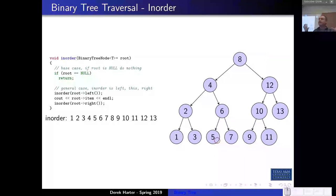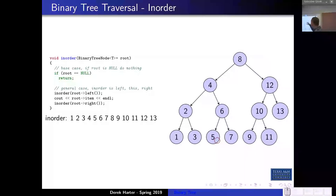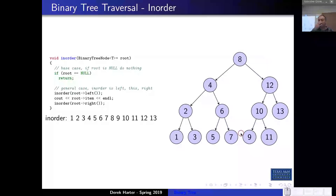Unlike a linked list where inserting would require a linear search to find the location, with a binary tree you can also insert in logarithmic time. If you want to insert a new node, you do the same thing — search to find the correct empty subtree and then create a new node and attach it at that location in the tree. Back to in-order traversal: because of the basic organization of a binary tree where everything to the left is less and everything to the right is greater, an in-order traversal will visit the nodes in sorted order.